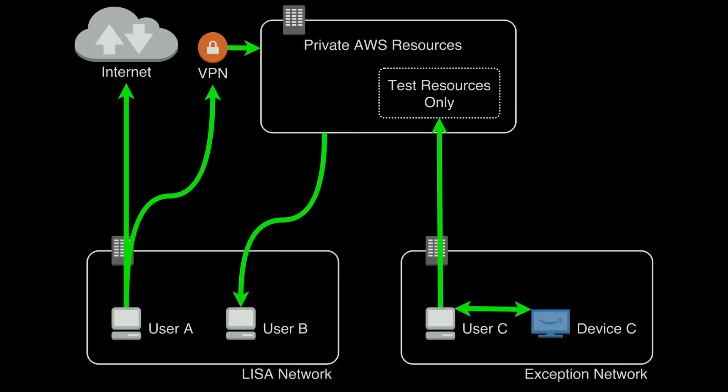Here's another way to view it, a higher-level overview. On the left we've got user A — all they get is Internet and VPN access. Once they are on the VPN, they can connect into those private resources, whether it's AWS or your data center. And then if they want to, they can come back down to resources in the office. On the right is an exception network — we'll go into that in more detail in a minute.